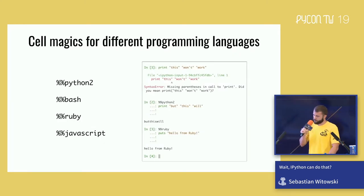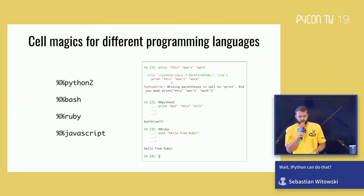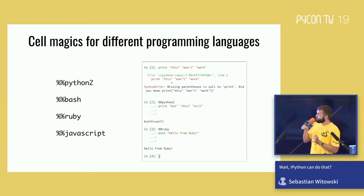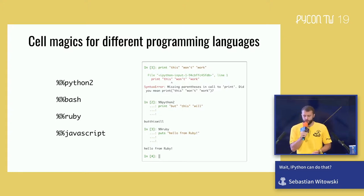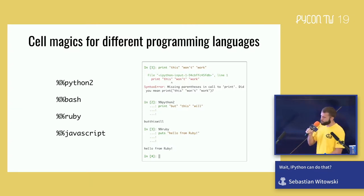All the magic functions I mentioned were line magics. As for cell magics, there's a whole collection of functions to run a piece of code written in a different programming language. One interesting case is running Python 2 code — assuming you're using Python 3, you type `%%python2`, write the code, press Enter twice, and IPython executes it with no problem. It also works with other languages like Bash, Ruby, or JavaScript out of the box. Notice how IPython actually correctly highlights the Ruby syntax in that example.